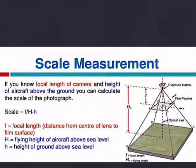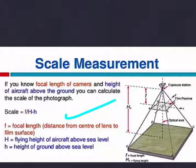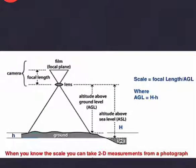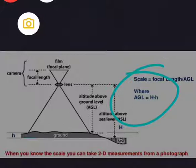We will discuss scale measurement — the derivation will be in Part 2. Briefly: if you know the focal length of the camera and the height of the aircraft above the ground, you can calculate the scale of the photograph. The formula is: Scale = f / (H − h), where f is the focal length (distance from the center of the lens to the film surface), H is the flight height of the aircraft above sea level (ASL), and h is the height of the ground above sea level. This shows the relation between focal length, altitude above ground level (AGL), and altitude above sea level (ASL).